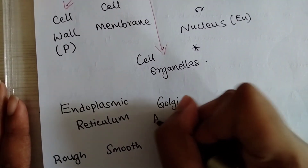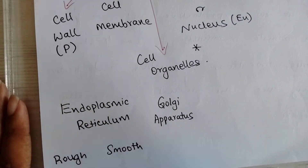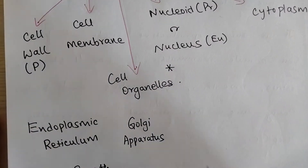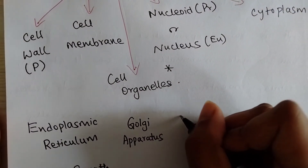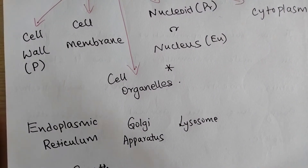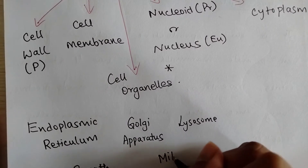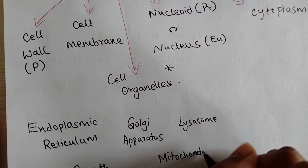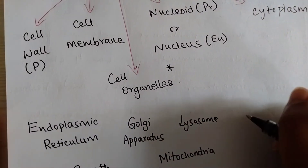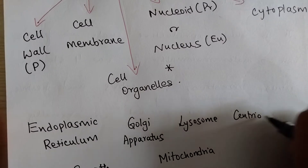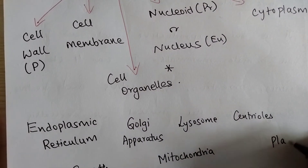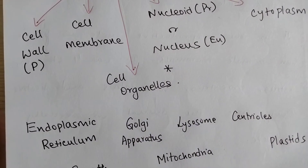We have the Golgi apparatus, which is in charge of packaging cell products. Then the next one is lysosomes, which are digestive packets within the cell. Then we have mitochondria, which is the powerhouse of the cell. Then let's look at centrioles, and we'll name a few more.